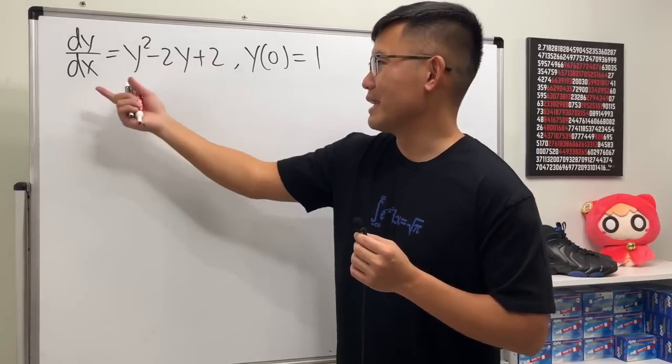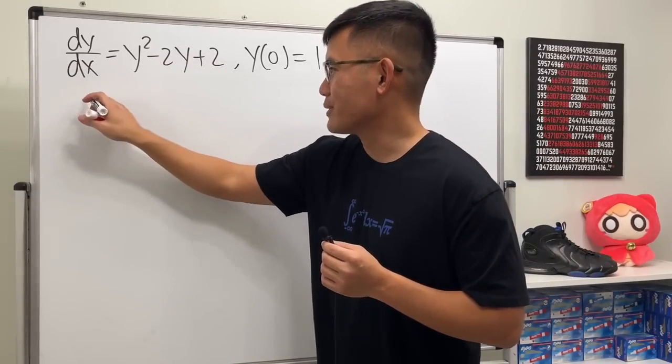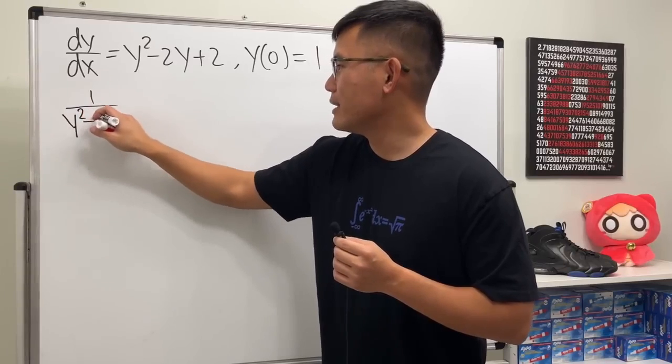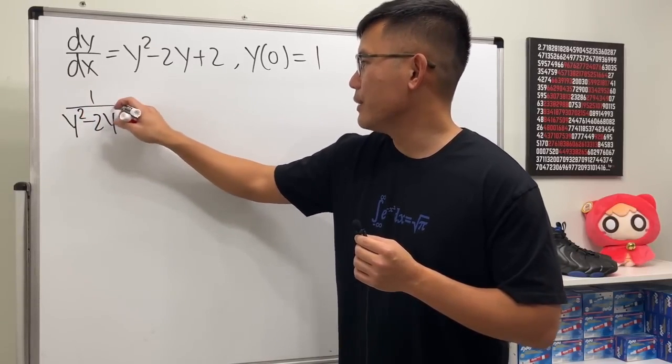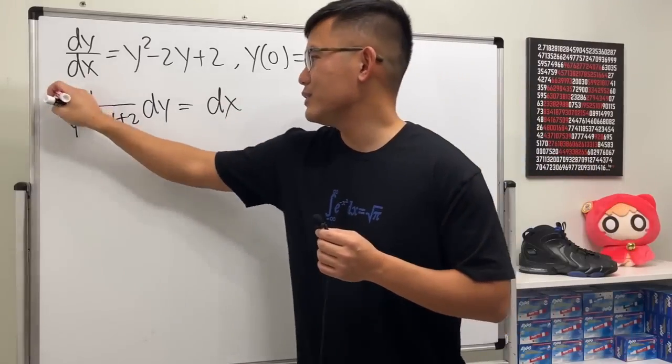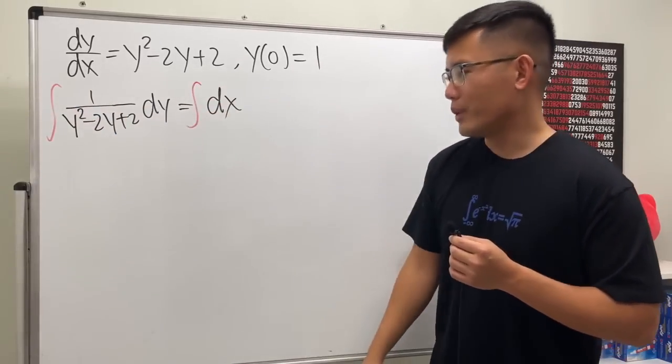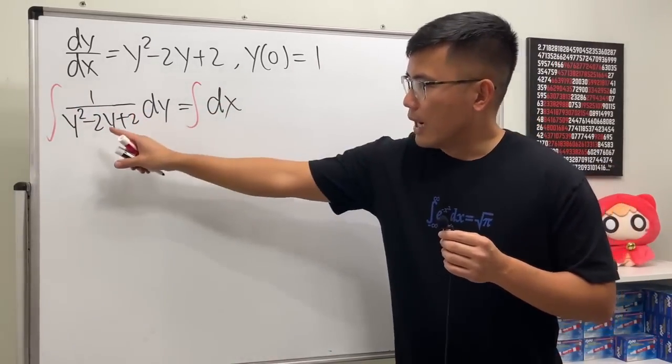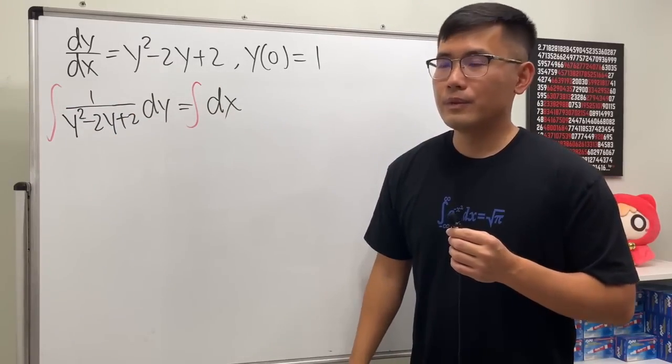So let's just go ahead and divide this on both sides and then multiply dx on both sides. We have 1 over (y² - 2y + 2) dy, and this is equal to dx. Just go ahead and integrate both sides like what we did earlier.